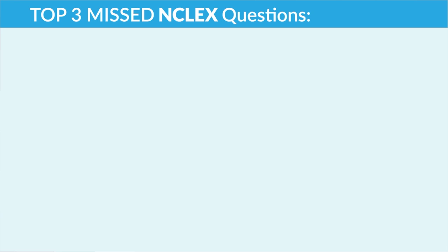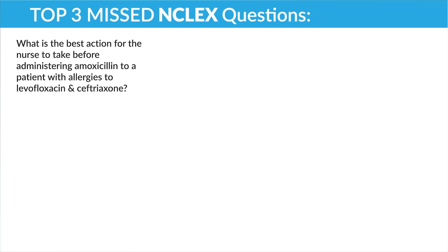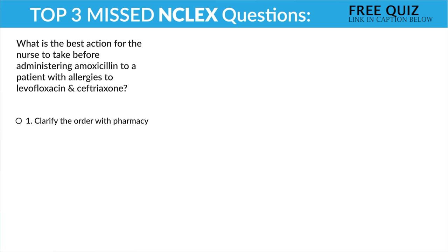Now some common NCLEX questions from our 10,000 question review. First, what is the best action for the nurse to take before administering amoxicillin to a patient with allergies to levofloxacin and ceftriaxone? The NCLEX wants you to follow the nursing process — always assessment of the patient first, intervention second, and then reassessment. Option one: clarify the order with pharmacy. No — we don't do this before assessment of the patient.